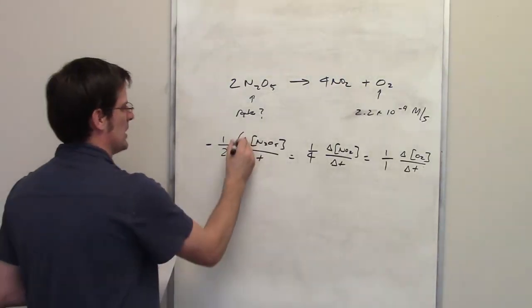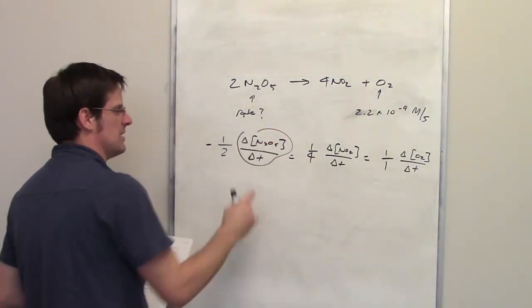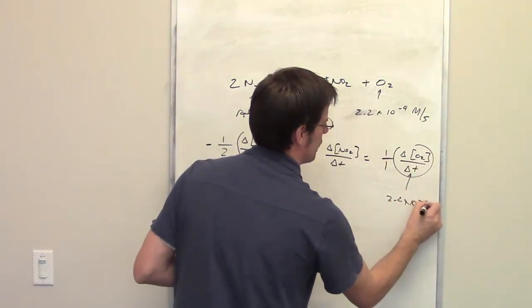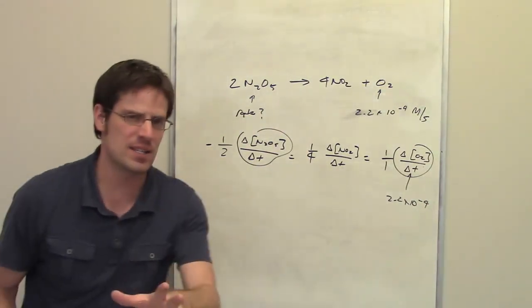What it's asking me in this question is to determine what this is when this is equal to 2.2 times 10 to the negative fourth molars per second. Hopefully that makes sense.